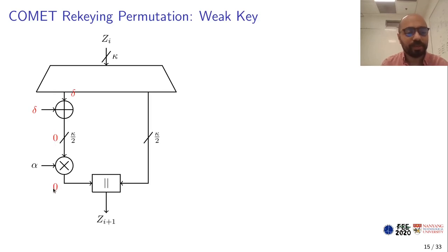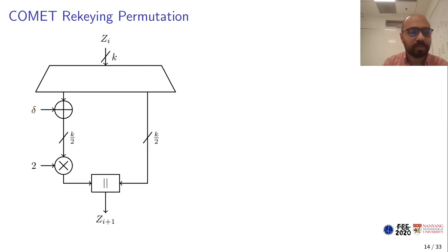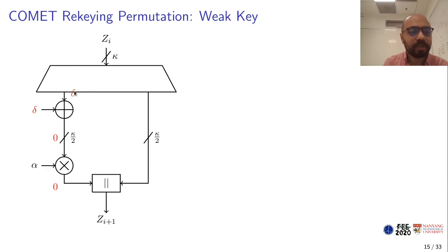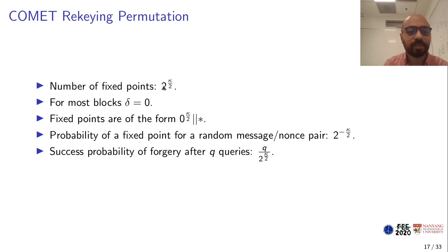Now we can see that if the left part is equal to delta, then the output of the XOR will be zero and the output of the multiplication will be zero. What's important to notice is that delta itself is equal to zero for most blocks. It's only used as a domain separation parameter and it only affects transitional blocks, so the beginning of the absorption phase of the associated data, or the beginning of the encryption phase, or the beginning of the tag generation phase. So if at the beginning of one phase, we have the left part is equal to delta, and this leads output to be equal to zero, then over all the next blocks of that phase, delta will be zero. As we can see, this will lead to a fixed point over the left half, and since the right half is unchanged, then it's a total fixed point. Now the number of fixed points is 2 to the k over 2, and this is how it looks like. Probability is 2 to the minus k over 2, and the probability of successful forgery for the attack is q over 2 to the k over 2.